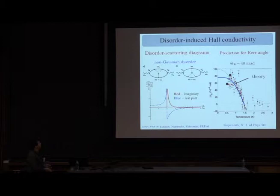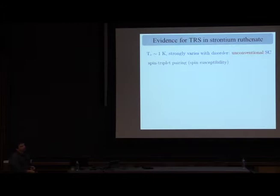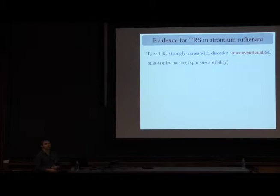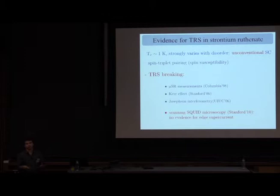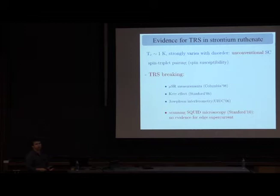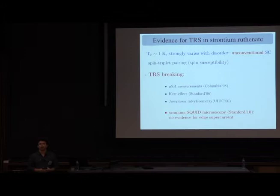That is one experiment seeing signatures of time-reversal symmetry breaking in strontium ruthenate, but there are others. Muon spin resonance measurements are also sensitive to tiny magnetic field effects in the bulk and see evidence of time-reversal symmetry breaking. There is also some evidence from Josephson interferometry where experimenters create different junctions and examine interference patterns in the supercurrent for different geometries.